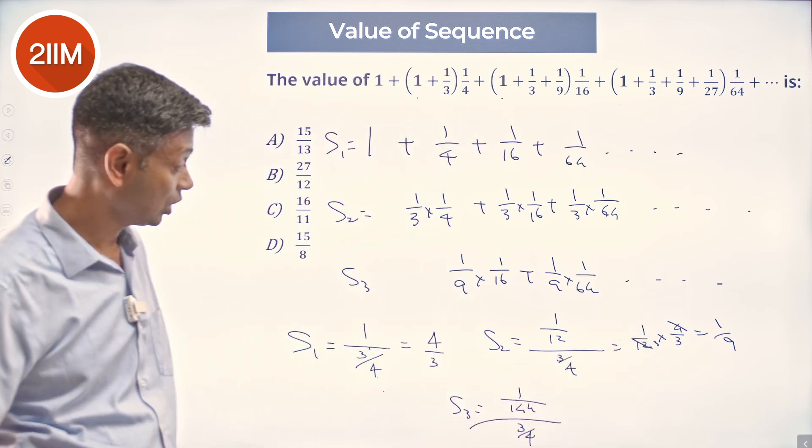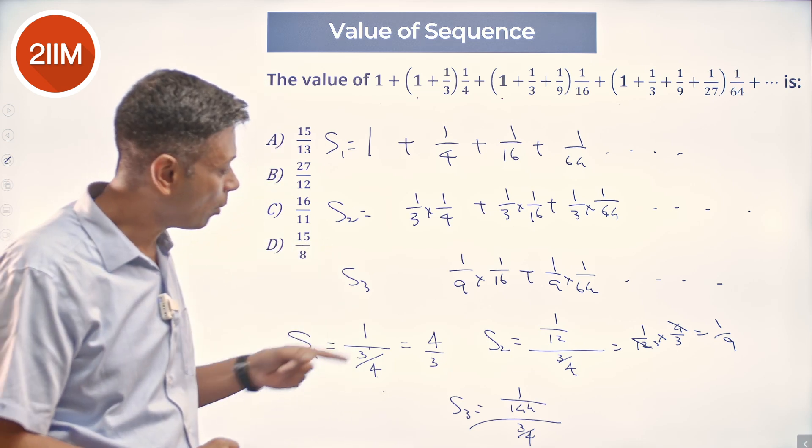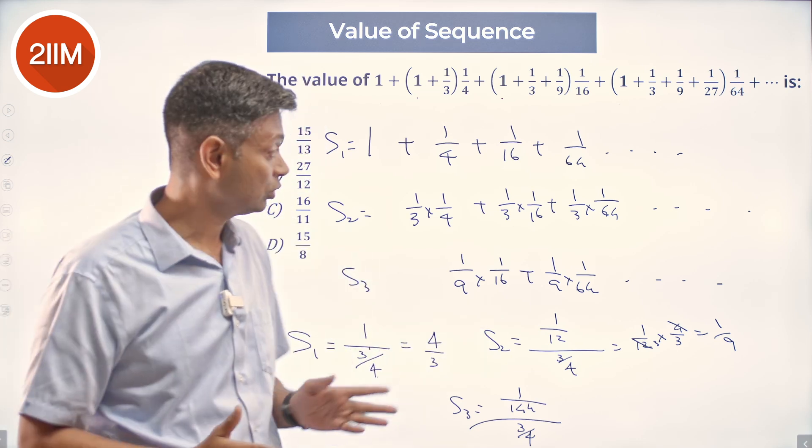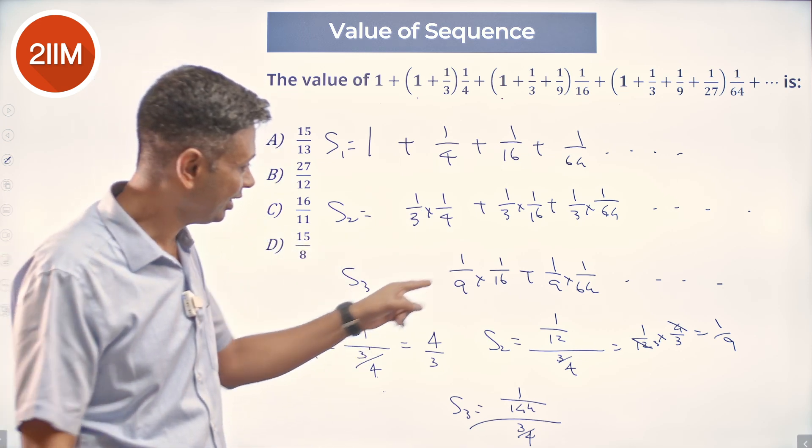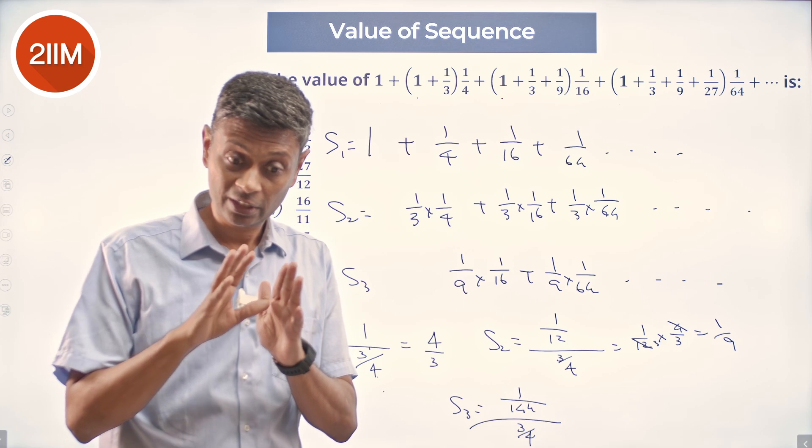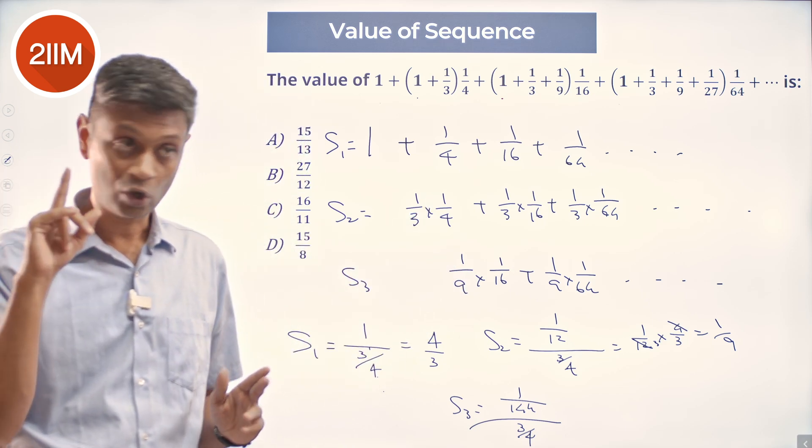Now, if you notice sum 2, we calculated in a very convoluted fashion. The common ratio is the same. The first term is 1/12, it is 1/3 and 1/4. Here, the first term is this first term into 1/3 into 1/4, or if you think about it...